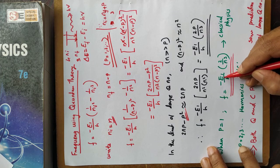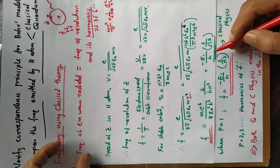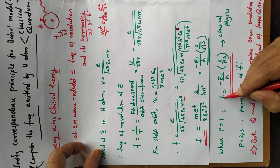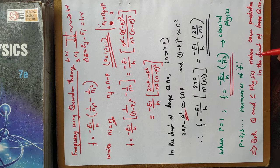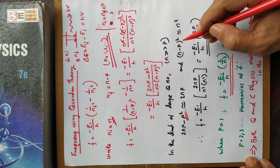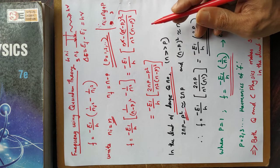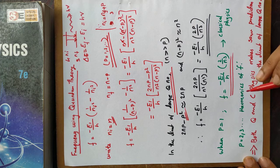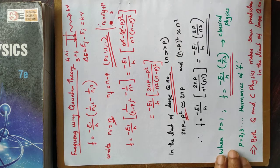When p = 1, f = (−E₁/h) · (2/n³), which is exactly the same result obtained from classical physics. When p = 2, we get twice this frequency, and p = 3 gives three times — these are the harmonics of f. Both quantum and classical physics make the same prediction in the limit of large quantum number. This correspondence principle is very useful to check the validity of quantum theory developed in the micro world.